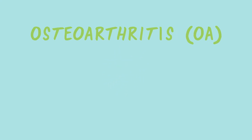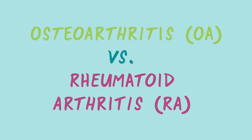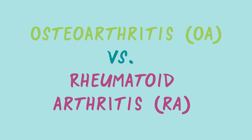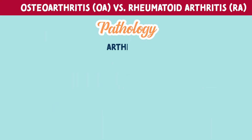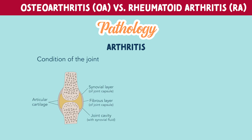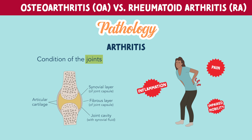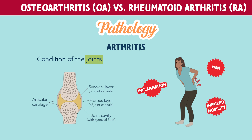Let's compare osteoarthritis, or OA, versus rheumatoid arthritis, or RA. Before we dive in, let's look at what arthritis itself is. Arthritis is defined as a condition of the joints. This can cause inflammation, pain, and impaired mobility.